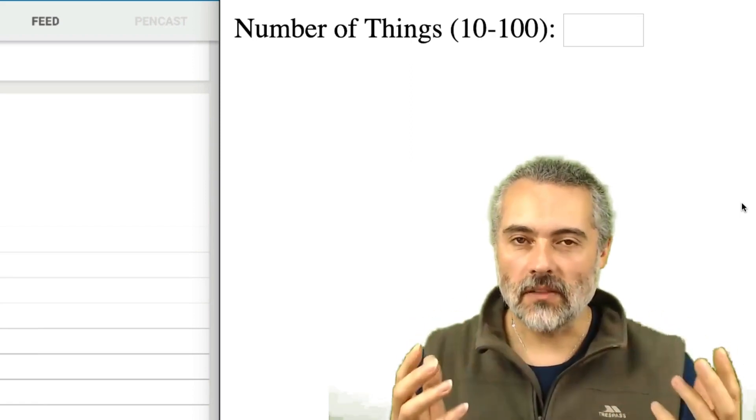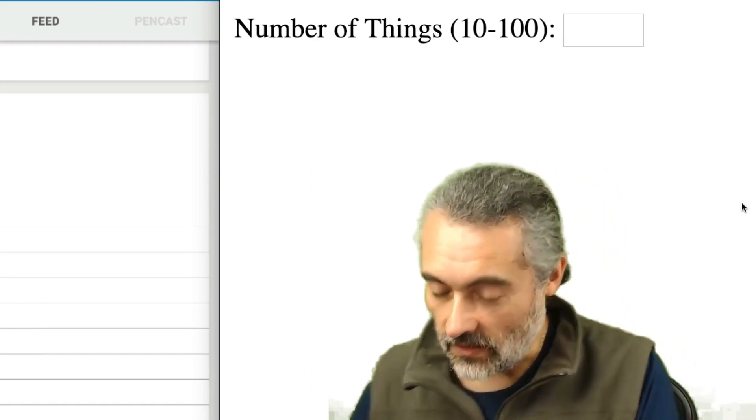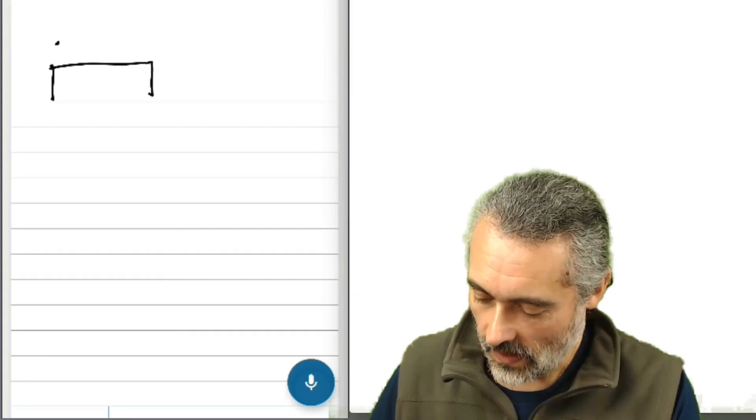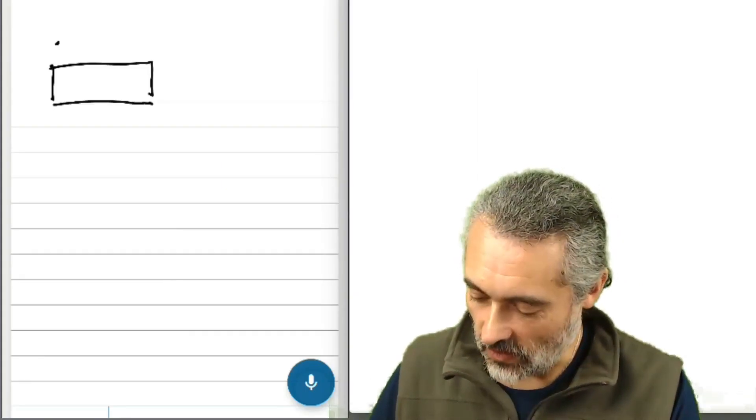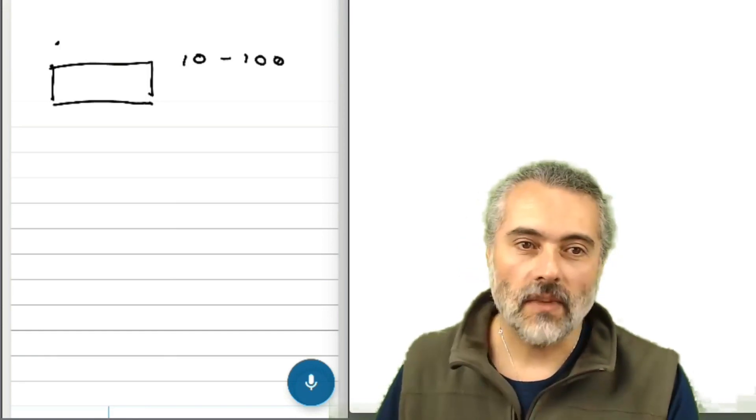if we find values at the boundaries, then we might find problems. So in this example here, we have an input field. And the input field is limited so that it will only accept 10 to 100 as numbers.